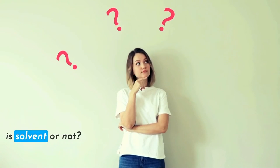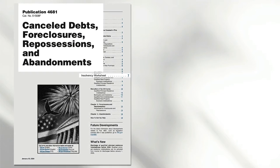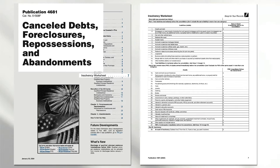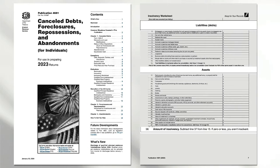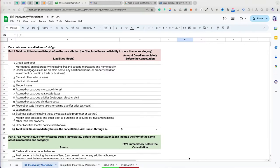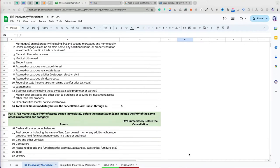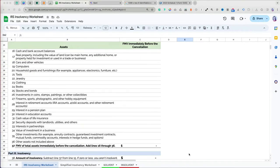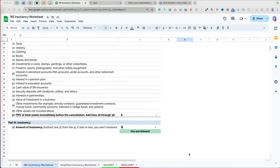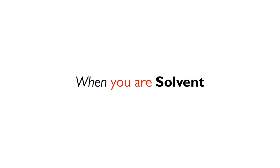How do you determine whether someone is solvent or not? The IRS has an insolvency worksheet in IRS Publication 4681 that you can use to help determine whether you were solvent or not at the time of the debt cancellation. I have created a Google Sheets file of the insolvency worksheet that you can use. Let's go through an example.